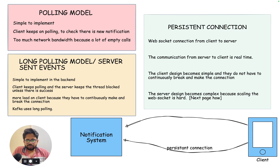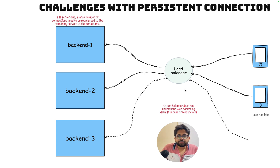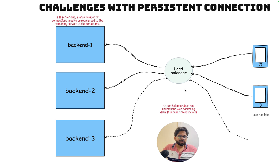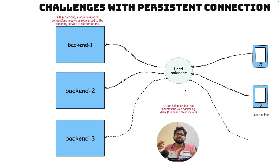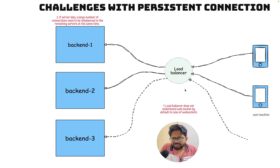So these are the two main things people use: long polling or server-sent events, and persistent WebSocket connections. These persistent connections have some challenges. The first is that multiple load balancers do not support transport-level load balancing by default, so you have to change their settings to enable it. By default they support HTTP at the application layer, but you can change it — that's the simpler challenge.